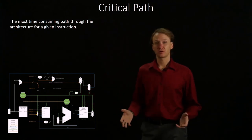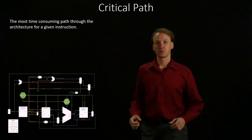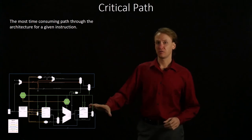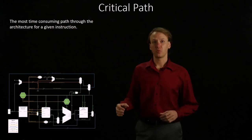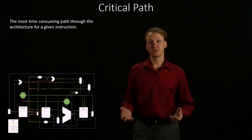When we're working with critical path, we're really interested in two things. Which is the most time-consuming part of our data path? And what parts of this can be processed in parallel?